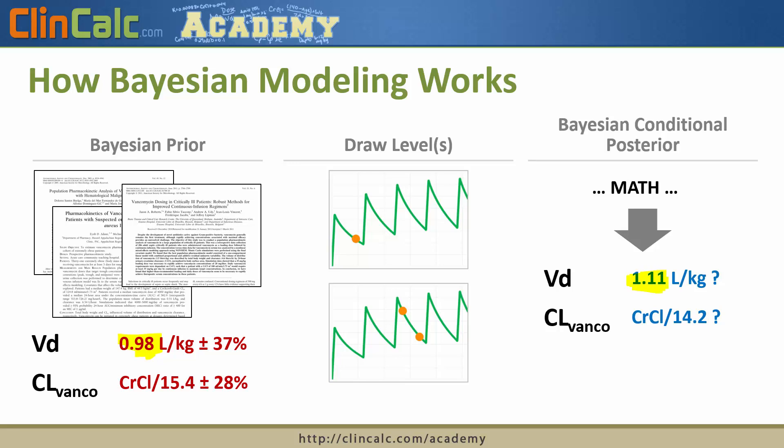With the modeling, you can see it estimated a volume of distribution slightly higher than the point estimate. Similarly, with vancomycin clearance, our constant was 14.2 as opposed to 15.4 with the original point estimate. Basically, we're using probability and that drug level to have a more accurate estimate of the most likely volume of distribution and clearance for this particular patient.